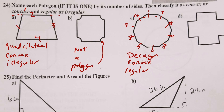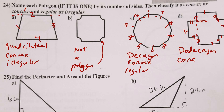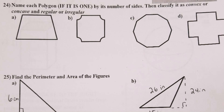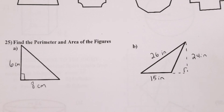D: I count the sides — 1, 2, 3, 4, 5, 6, 7, 8, 9, 10, 11, 12 — that's called a dodecagon. It is concave because if you extended those side lengths they would go inside. Anything concave is automatically irregular. That's it for number 24.